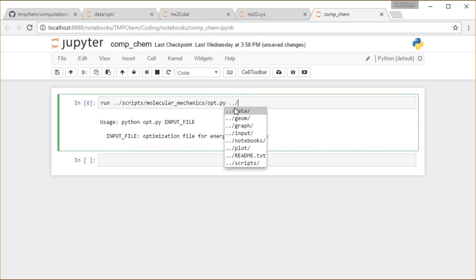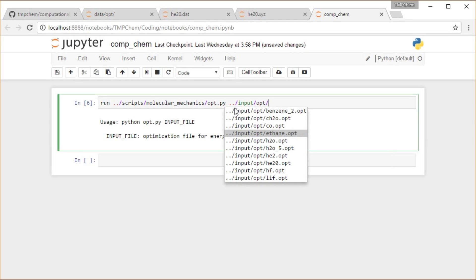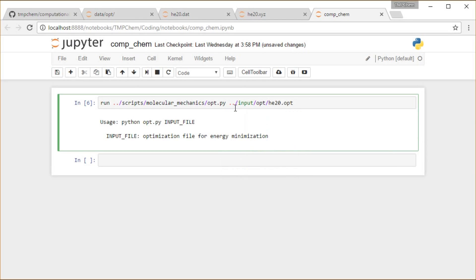So up one directory, go to input, opt, helium20.opt. And this one doesn't generate a lot of command line output, so that's not very interesting.